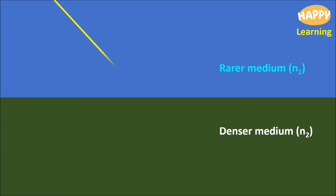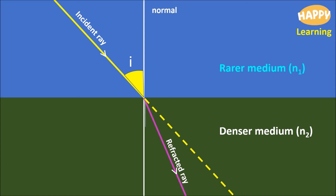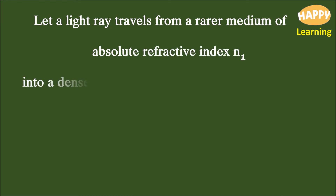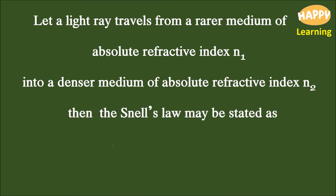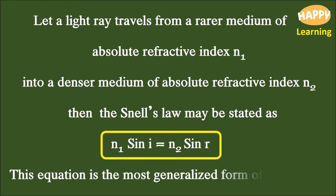This is the denser medium of absolute refractive index n₂, and this one is the rarer medium of absolute refractive index n₁. The incident ray, normal, and angle of incidence i are shown. Let a light ray travel from a rarer medium of absolute refractive index n₁ into a denser medium of absolute refractive index n₂. Then Snell's law may be stated as: n₁ sin i = n₂ sin r. This equation is the most generalized form of Snell's law.